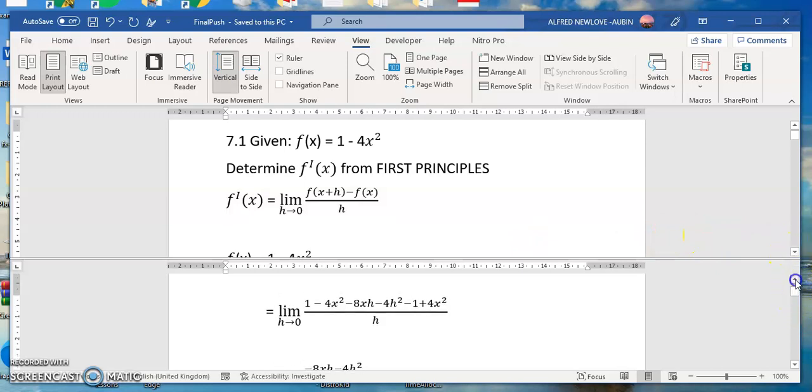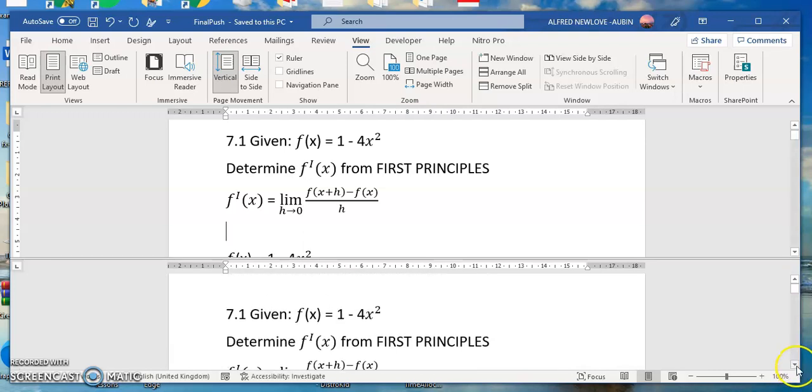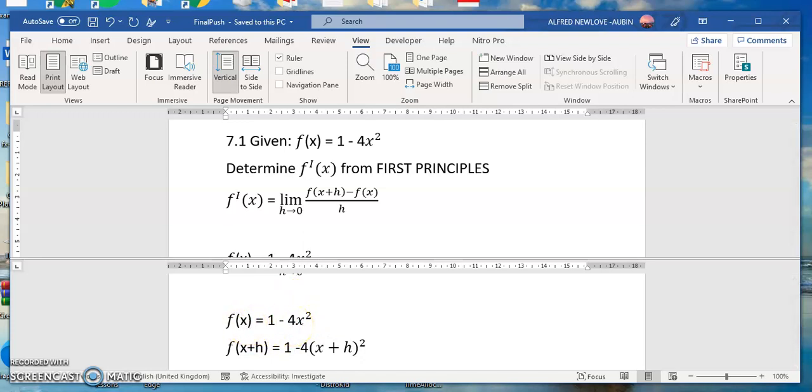Let's look at how you're going to do that. Now with this one, you know we're giving this function or the original function, and the original function states that x, which is the domain, f(x) is going to be 1 minus 4 times the domain squared. Now we need to find the value of this or the expression for x plus h.